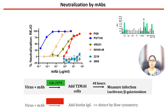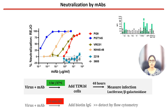In standard neutralization assays, the virus and antibody are pre-incubated for one hour at 37°C prior to adding target cells. In our envelope binding assay, the antibody and virus were incubated for 30 minutes at 37°C. We wanted to see if increasing the antibody-virus interaction time would facilitate binding, especially for antibodies such as V2Q, V3, and VRC01 that showed little to no binding after 30 minutes.